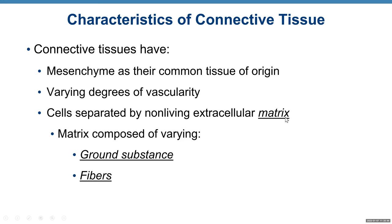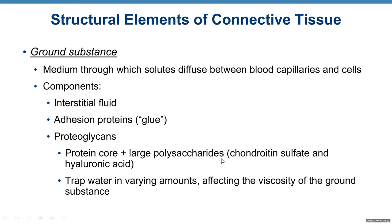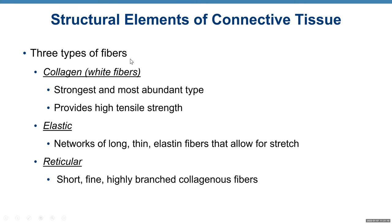Matrix — the extracellular material between cells of connective tissue — is made of ground substance and fibers. Components of ground substance include fluid, adhesion proteins, proteoglycans, and a watery component. There are three types of fibers: collagen or white fibers — the strongest and most abundant type, providing high tensile strength; elastic fibers — a network of long, thin fibers that allow for stretch; and reticular fibers — short, fine, highly branched collagenous fibers.